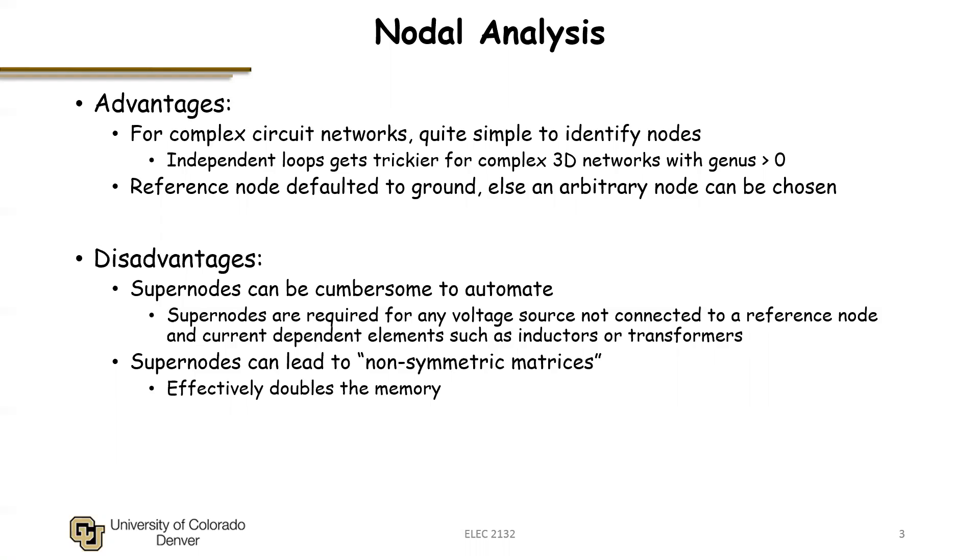This is unlike trying to automate a loop analysis, which would force us to automatically find all the loops in the network and identify the minimum number that would cross all branches. We call those independent loops, and this would require a search algorithm and also higher level complexity for three-dimensional networks to identify the genus of the network. Clearly, a nodal analysis would be much easier to implement from that standpoint.